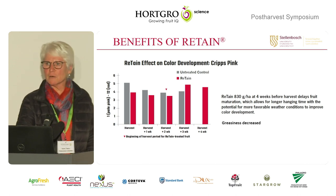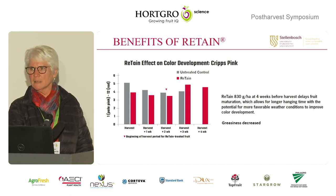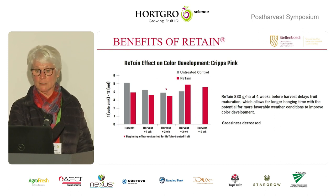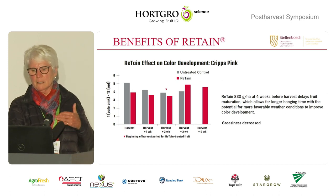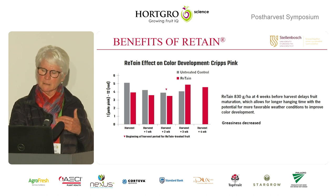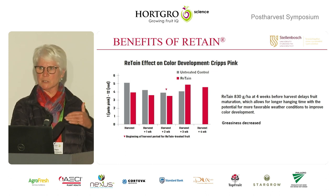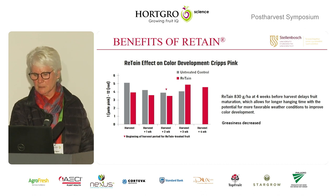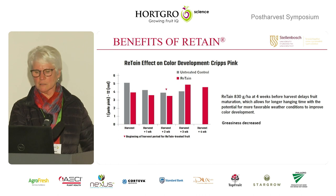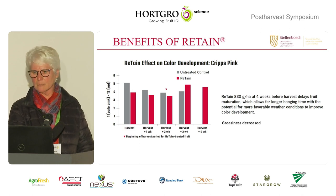Ian also mentioned red color development. If we apply Retain without the right conditions, it will delay and reduce color development. Work done on Cripps Pink shows that using the full rate four weeks before expected harvest, combined with a longer hanging time, can move the fruit — as a late cultivar — into a period where temperatures come down and you get better color development by delaying harvest, as well as the benefits of increased fruit size and a definite decrease in greasiness.